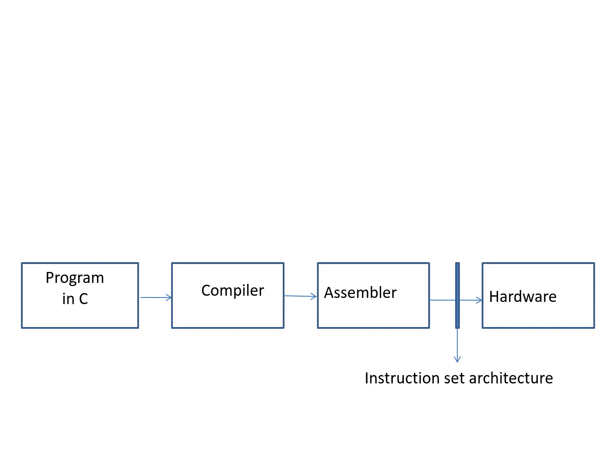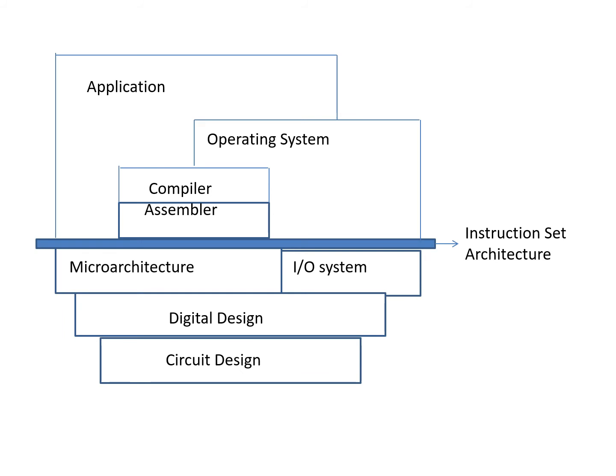The instruction set architecture defines all the information about the hardware, or we can say it gives how the assembly-level code should be converted into machine code, so that the particular hardware executes the instruction. This gives the overall picture of the computer system and where the instruction set architecture has its role.